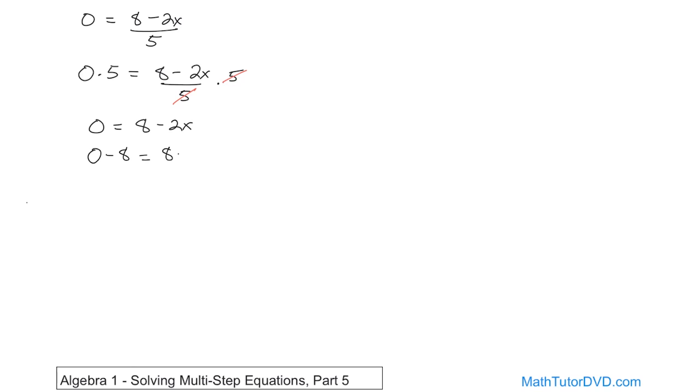Subtract 8 from the left, 8 minus 8 minus 2x, so we'll be subtracting on the right, and so what we'll have on the right, this is going to go out to 0, and so on the left, you'll have negative 8, and on the right, you have negative 2x.